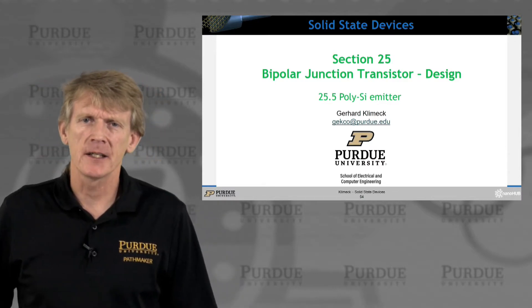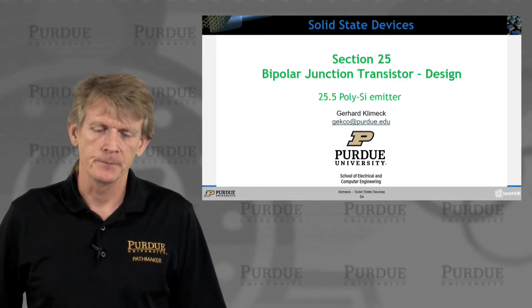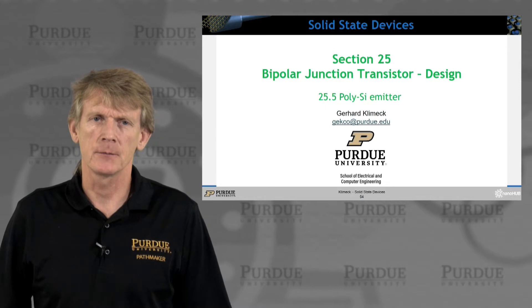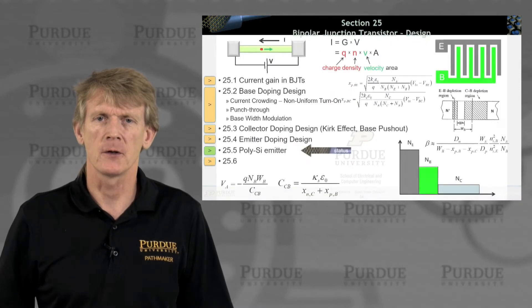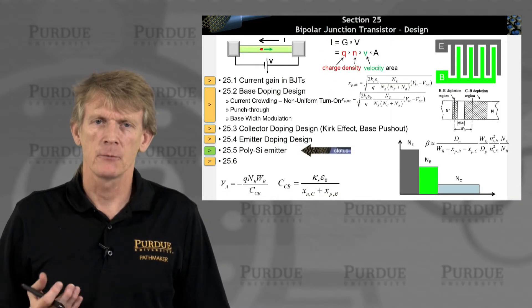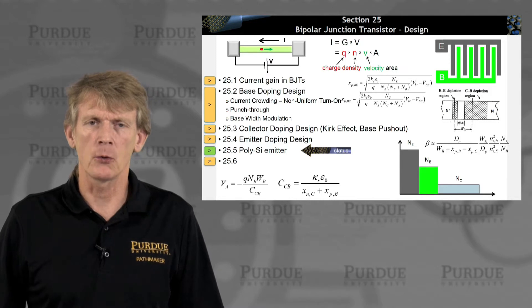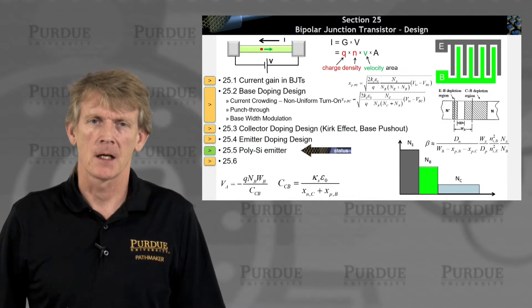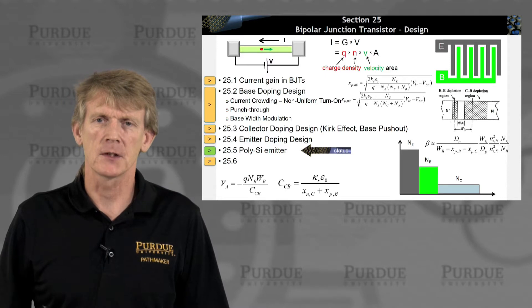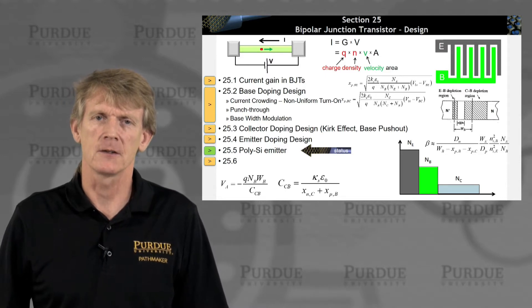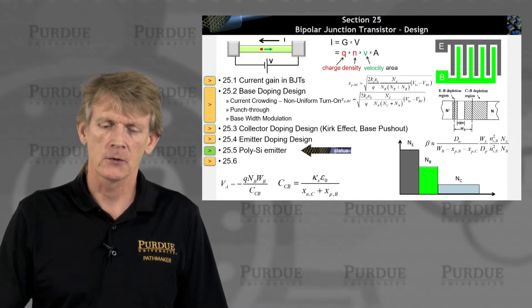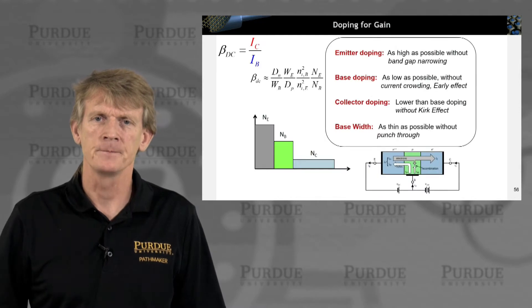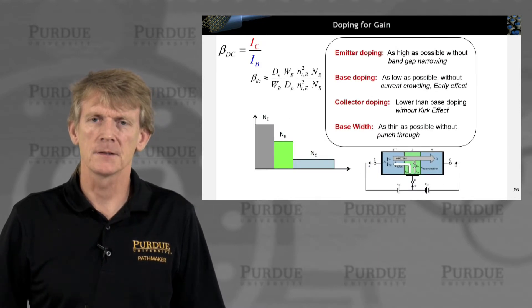So let's look at the polysilicon emitter as a design concept to improve BJT performance. We just talked about various doping modifications and why they are advantageous and why they can also lead to detrimental effects on the current gain. Let's look at the polysilicon emitter as an alternative.